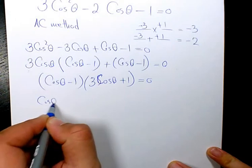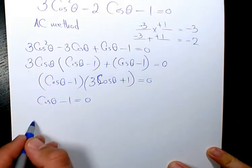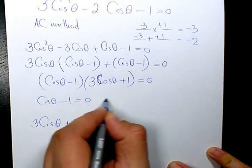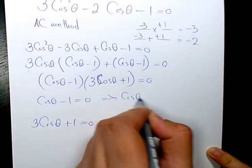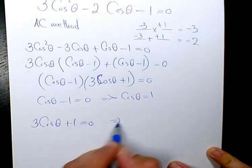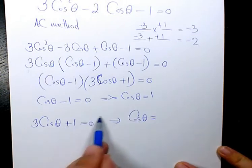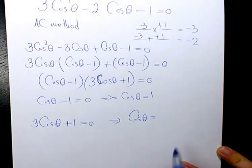Then, cosine theta minus 1 equals 0, and 3 cosine theta plus 1 equals 0. So cosine theta equals 1, and here, if we solve it, if we isolate it for cosine, that will be negative 1. When you divide both sides by 3, it's going to be negative 1 over 3.